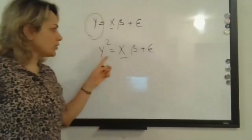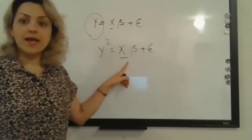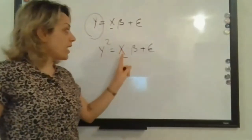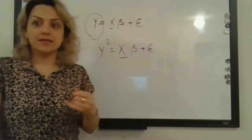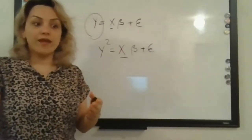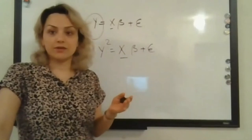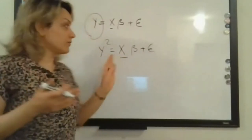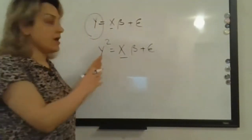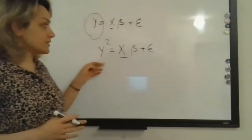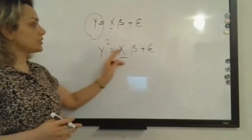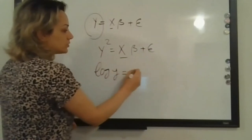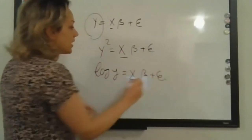You might ask: why do we work with y and not with x? The main reason is that you might have more than one x as an independent variable. When working with multiple linear regression we can have x1, x2, x3. Altering all of them would be complex, but altering y — which is just one dependent variable — is easier. So we can have y squared equals x-bar beta plus epsilon, or log of y equals x-bar beta plus epsilon.